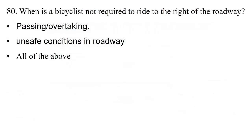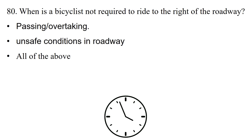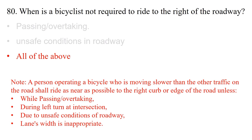Question: When is a bicyclist not required to ride to the right of the roadway? Option 1: Passing or overtaking. Option 2: Unsafe conditions in roadway. Option 3: All of the above. The answer is option 3: all of the above. A person operating a bicycle who is moving slower than other traffic shall ride as near as possible to the right curb or edge of the road, unless passing or overtaking, during a left turn at an intersection, due to unsafe conditions, or when the lane's width is inappropriate.